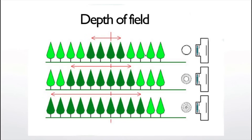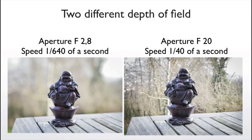What does a big or small depth of field look like? At F2.8 with a large aperture, the statue is sharp and the background is completely blurry — it's an artistic decision. I want something sharp and the rest blurry, so I go for a big aperture like F2.8. Some lenses can only open to F4 — usually cheaper lenses. More professional lenses can open up to F2.8.